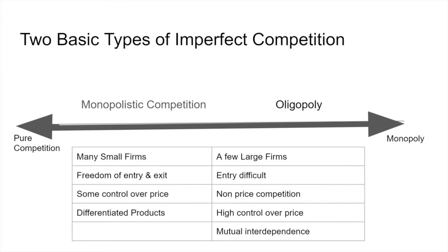Airlines also have differentiated products. WestJet used to be very good at this — they tried to differentiate themselves from Air Canada by presenting as a more user-friendly, laid-back airline, telling jokes during announcements. Air Canada tended to be very stiff by comparison. WestJet also differentiated on having newer aircraft, whereas Air Canada's were older. But the differentiation was really more in the mind of the consumer than in reality, since both airlines land and take off within 10 minutes of each other and offer similar levels of service.